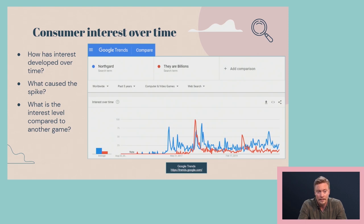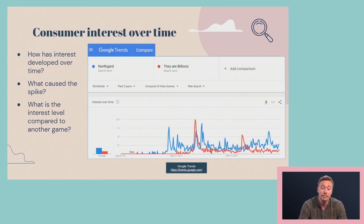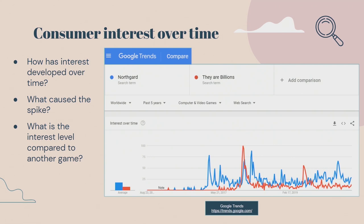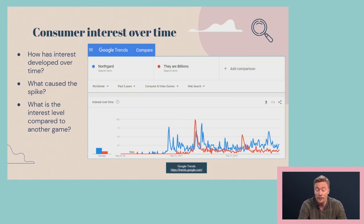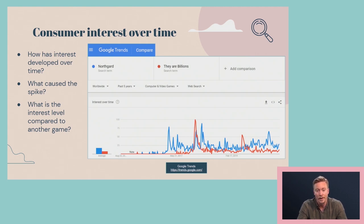Next, you can look at interest over time. Google Trends is a free tool that could be a good starting point. You'll find spikes, and your job is to investigate what caused them — was it a trailer or an expansion? How was that received? How does it compare to other data you collected? This is very much hands-on investigative work, especially if you don't have any budget. You can also make comparisons — what's the interest level compared to another game? But it's an index with a maximum of 100, not hard numbers of searches, so you'll need other tools for that.